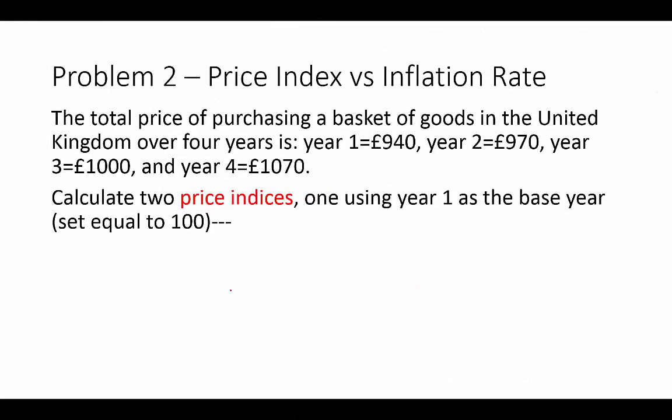Now let's go on to problem two — price index versus inflation rate. This problem gives us the total price of purchasing a basket of goods in the United Kingdom over four years: year one is 940 pounds, year two is 970 pounds, year three is 1,000 pounds, and year four is 1,070 pounds. We're supposed to calculate two price indices — one using year one as the base year, then one using year four. First, let's focus on year one. Year one is 940, and the base year always equals 100.